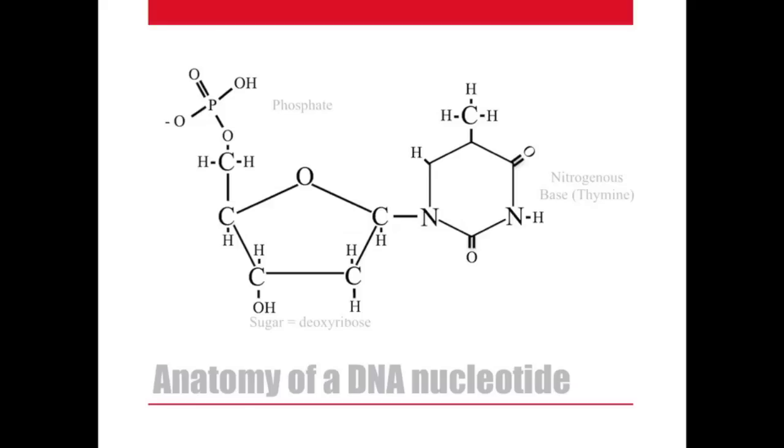A nucleotide has three distinct parts: the phosphate group, the sugar, in this case deoxyribose, and the nitrogenous base, which could be A, G, C, or T. In this case, it's T, thymine.